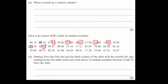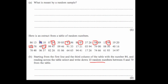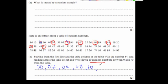We need to get 10 random numbers between 0 and 79, so we cross off any that aren't in that range. The first valid number is 30. Then 97 — no. Next: 07, then 04, then 48, then 60, then 12. That gives us six numbers so far, so let's carry on.